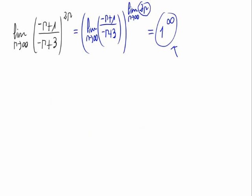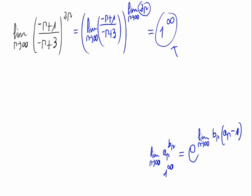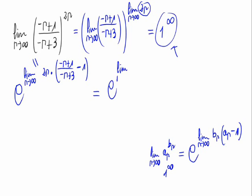We know that the formula for the limit when n approaches infinity of a_n raised to b_n is equal to e raised to the limit when n approaches infinity of b_n times (a_n minus 1). In our case, this limit would be e raised to the limit when n approaches infinity of 2n times ((-n+1)/(-n+3) minus 1).